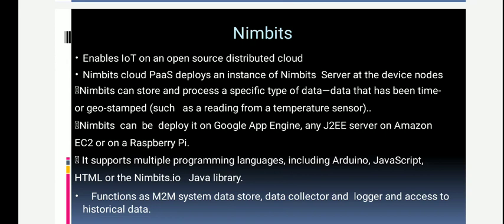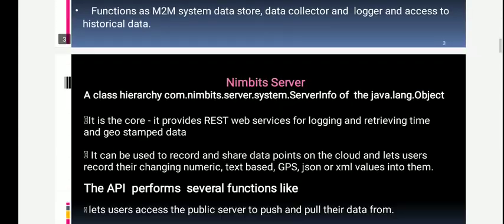Nimbits can be deployed on Google App Engine, any J2EE server, Amazon EC2, or Raspberry Pi kits. It supports many programming languages like Arduino, JavaScript, HTML, and the Nimbits.io Java library. It functions as a machine-to-machine system mainly for data storing, collection, and providing logger services for accessing historical data.